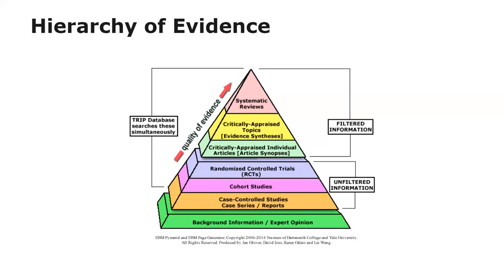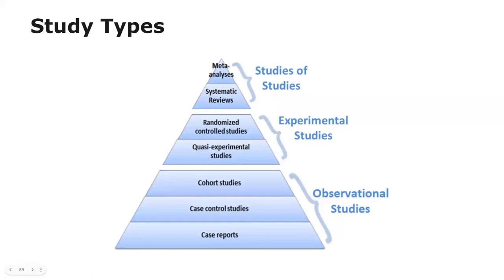This is where filtered information comes in at the top of the pyramid. This filtered information is essentially summaries of many studies on a topic where a body of literature is looked at and conclusions are drawn. If you find systematic reviews or critically appraised topics, you can know that you're looking at stronger evidence. Meta-analyses are really at the top of the pyramid because they use statistical analysis of the combined results from the literature to draw conclusions. The graphic also shows how observational studies are lower levels of evidence while experimental studies are higher levels. Studies of studies — systematic reviews and meta-analyses — are at the top. If you can find studies closer to the top of the evidence pyramid, you can feel more confident about their conclusions.